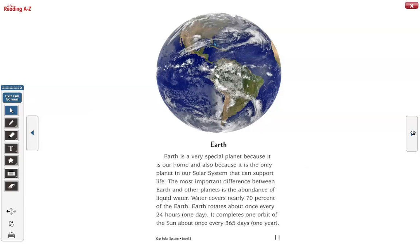Earth is a very special planet because it is our home and also because it is the only planet in our solar system that can support life. The most important difference between Earth and the other planets is the abundance of liquid water. Water covers nearly 70 percent of the Earth. Earth rotates about once every 24 hours, one day.